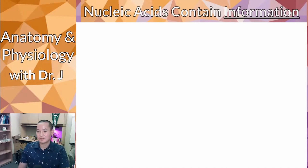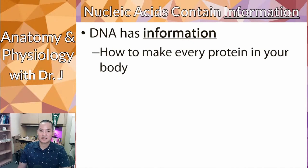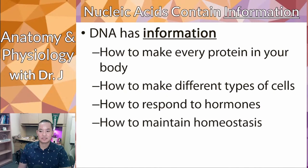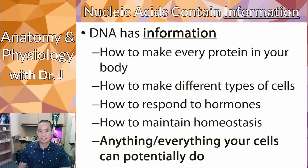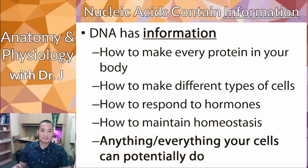Why do we care about base pairing? Nucleic acids contain information. DNA has the information on how to make every single protein in your body, how to make different types of cells, how to respond to hormones — pretty much everything your cells can potentially do. While every cell doesn't do the job of every other cell — neurons don't work like muscle cells, and muscle cells don't work like blood cells — all the information to make those different types of cells is encoded in your DNA. This is why nucleic acids are so important.